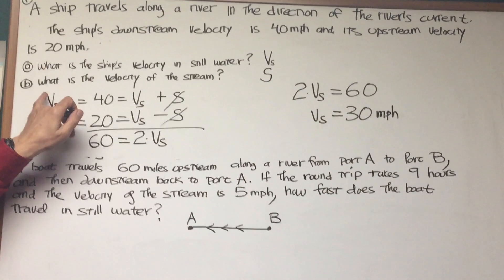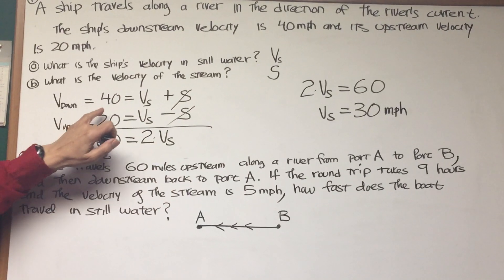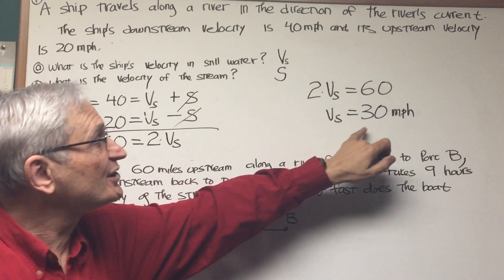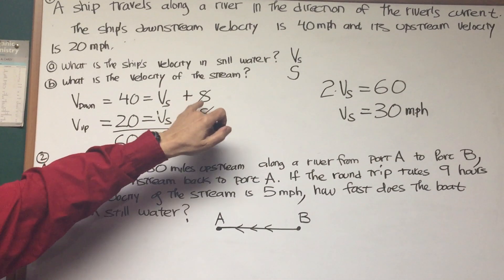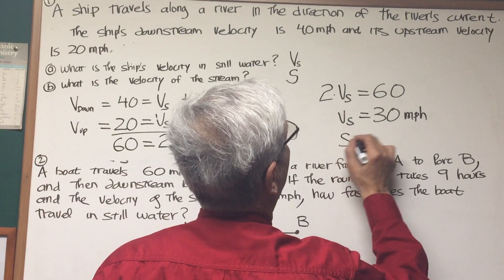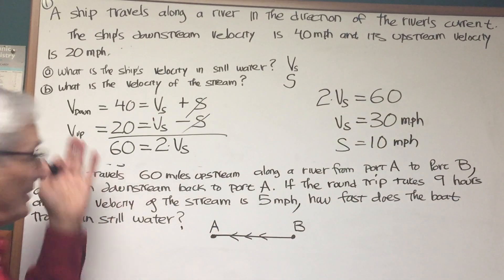Now, what is the velocity of the stream? Well, that's easy to find out. All we have to do is take one of these original equations, like the first one, V sub S plus S. Well, we know V sub S is 30. 30 plus S is 40. Well, very simply, S is equal to 10. And that solves our problem, part B of the question.